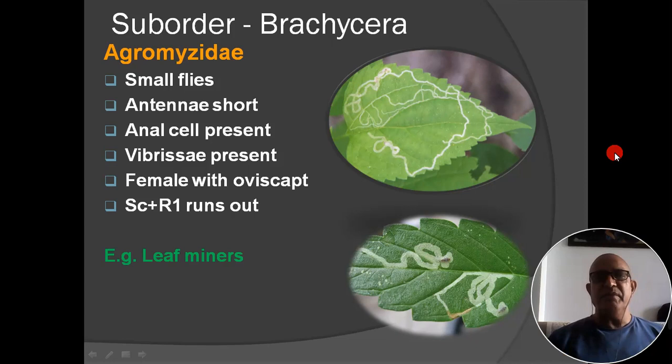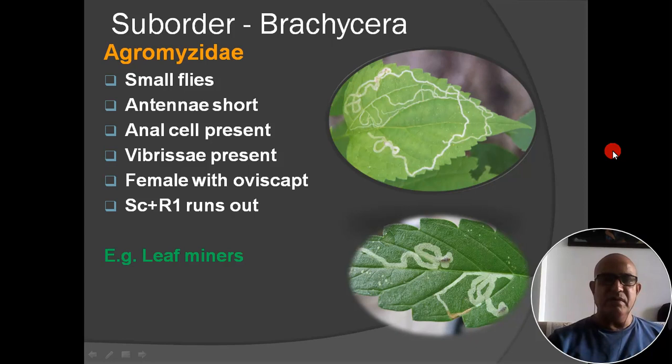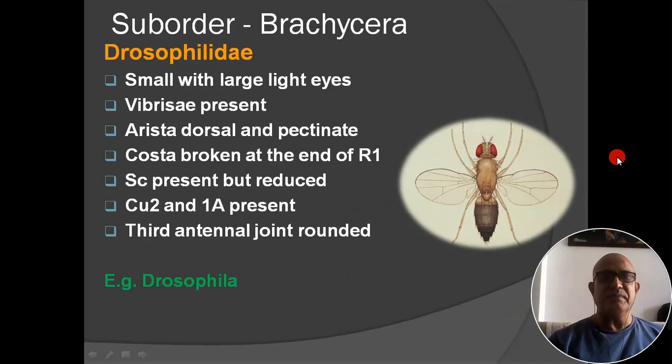Next family: Agromyzidae. These are small insects; antenna short; anal cell present; vibrissae present; female with subcosta plus R1 always present. Example: leaf miners. You can see the white stripes/trails on leaves — these are made by the insect feeding inside the leaf tissue.